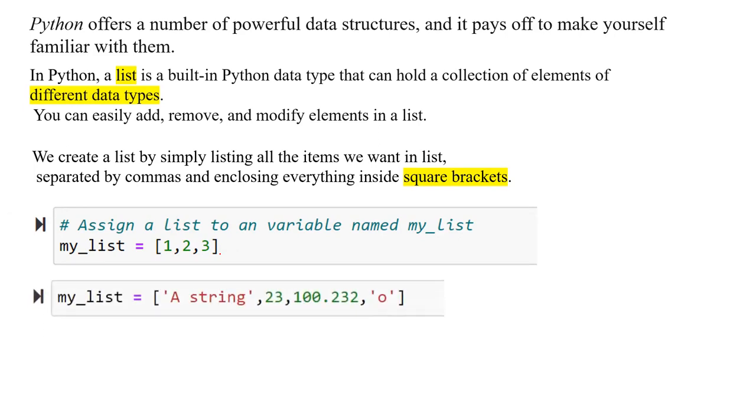You can create another list, my_list, which is a variable name, using square brackets. You have a string using single quotes, and then comma 23, which is an integer, comma 100.232, which is a floating number, and another string, and then you close off the square bracket.